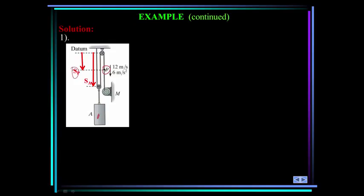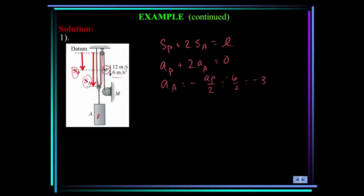So first we'll define position coordinates to relate the velocities of point P on the cable and the block A. S_P is defined to some point on the cable, and S_A is defined to the block, since the block moves with the pulley. The kinematics: S_P + 2S_A equals the length of the cord. Differentiate this equation twice to relate the accelerations. So a_P + 2a_A = 0. The acceleration of A is minus a_P over 2. That acceleration of P was given as 6 meters per second squared. So the acceleration of A is minus 3 meters per second squared. It's in the upward direction.